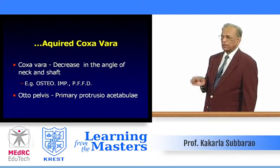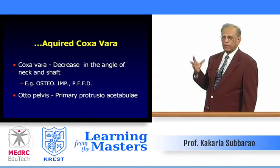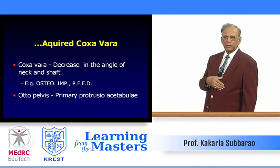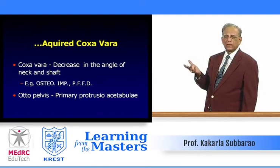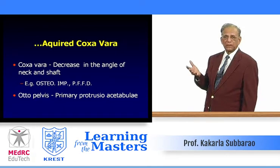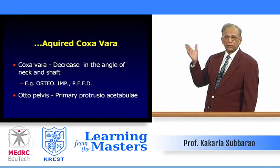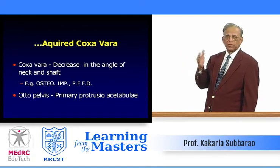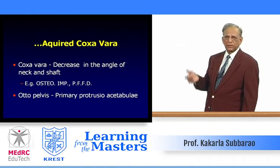There is also the term otto pelvis, meaning primary protrusion acetabuli. It may be developmental, but it is often seen in osteomalacia, particularly in women. It can also be seen in rheumatoid arthritis and other acquired conditions.